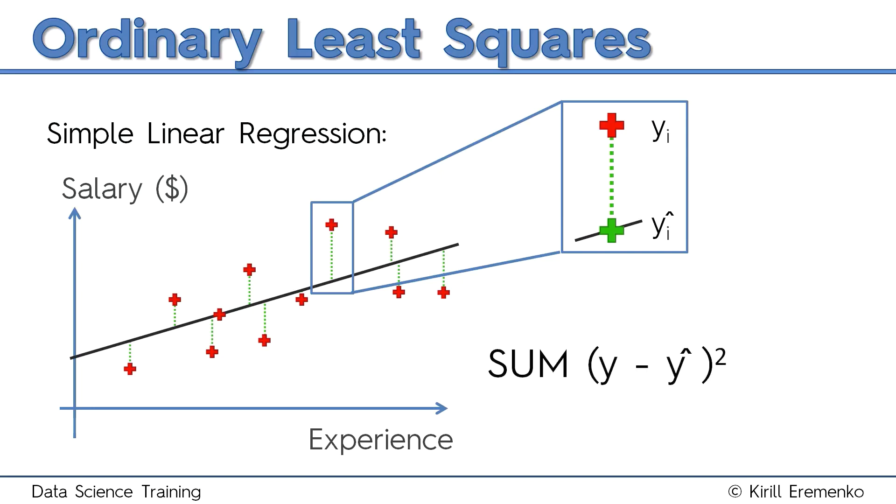Now, to get this best fitting line, what is done is you take each one of those green lines or those distances, you square them, and then you take the sum of those squares.